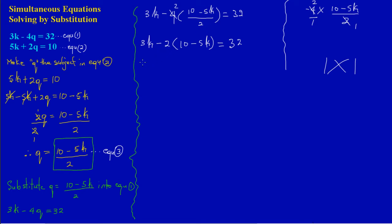Now I expand the bracket. I have 3K, and negative 2 times 10 gives negative 20, and negative 2 times negative 5K gives positive 10K. So: 3K minus 20 plus 10K equals 32. Collecting like terms: 3K plus 10K minus 20 equals 32, which gives 13K minus 20 equals 32.